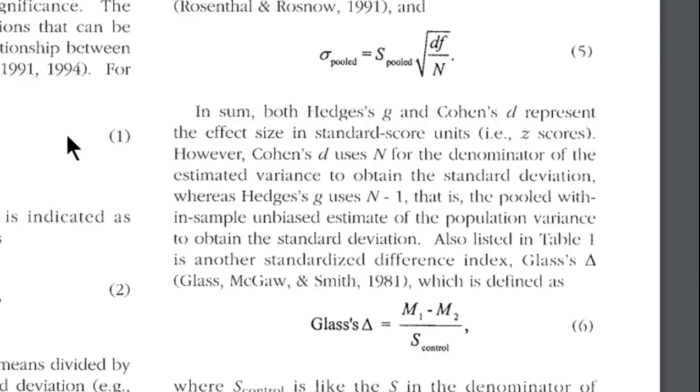And I note that occasionally you'll see a reviewer get irritated that somebody reports Cohen's d when they should be reporting Hedges' g.